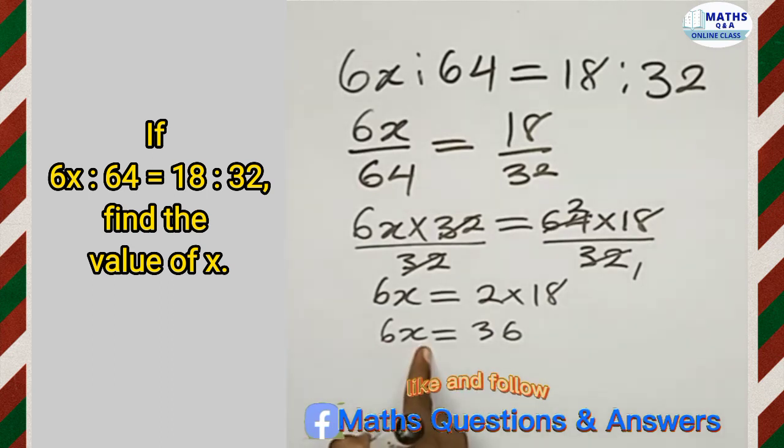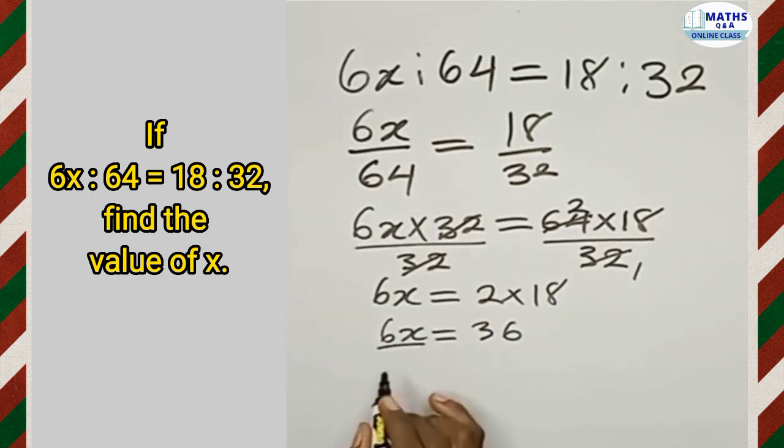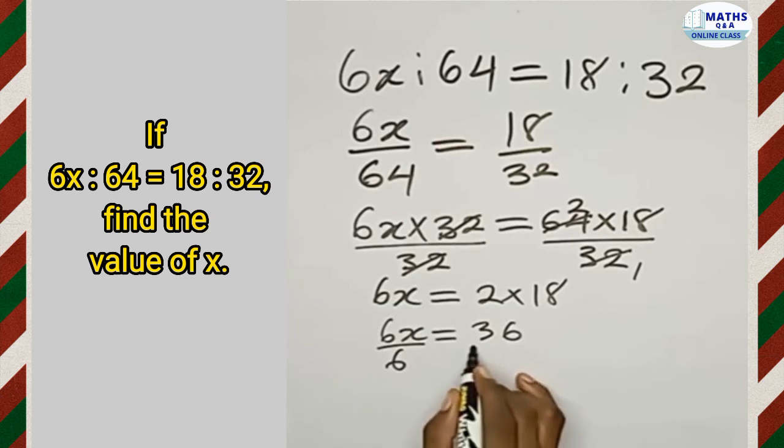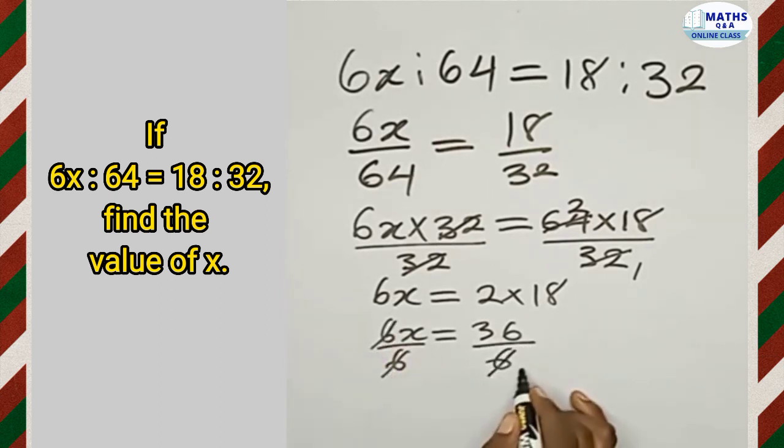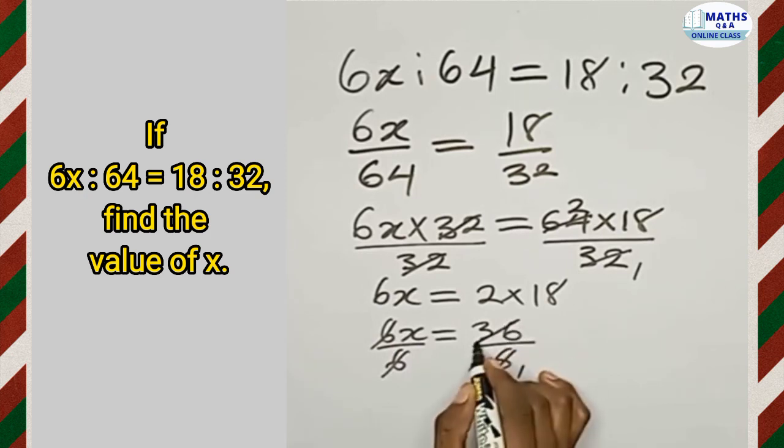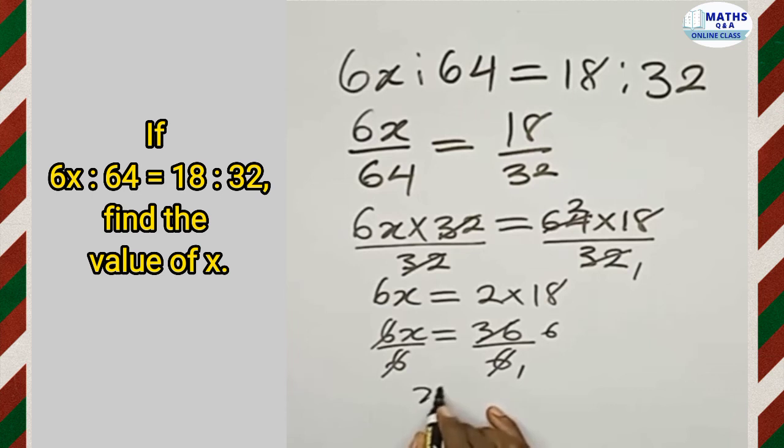Now 6 is being multiplied by x, so we divide both sides by 6. 6 cancels 6, and 6 divides 36 six times, implying that our x is equal to 6.